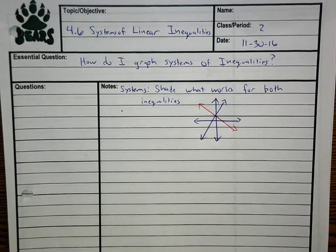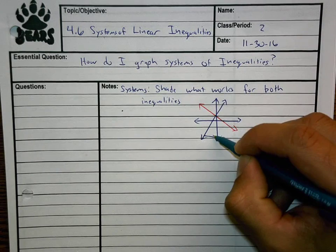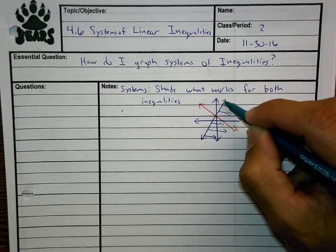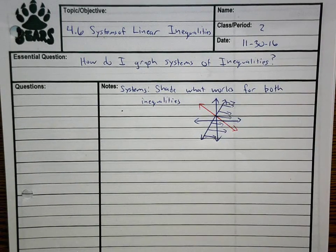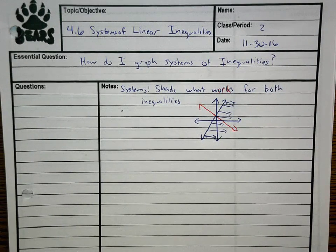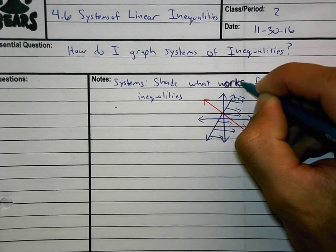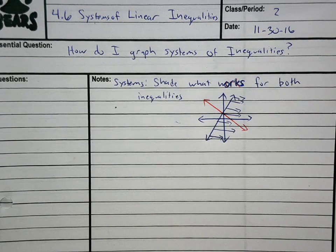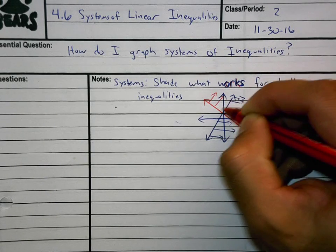For the blue inequality, I'm going to shade this side of the blue line. For the red one, shade what works for both inequalities. It looks like a greater than inside. I have the right side of the blue line shaded and I am going to shade above the red line.